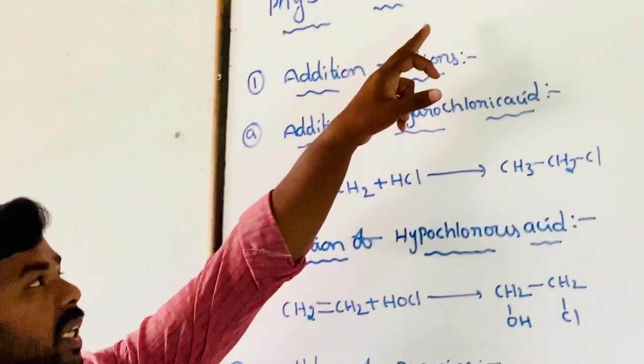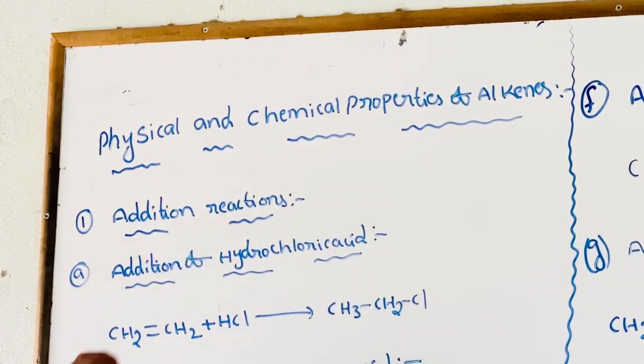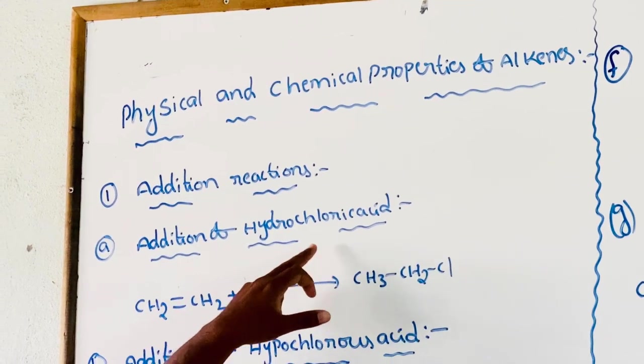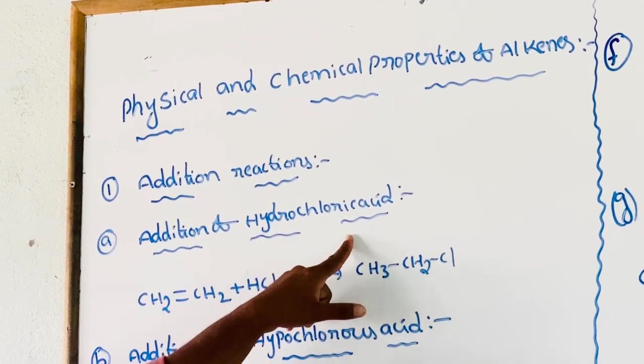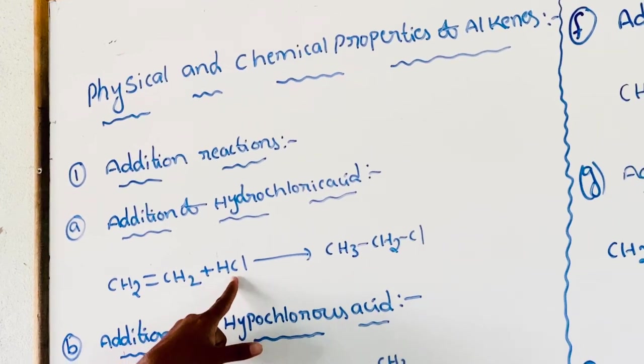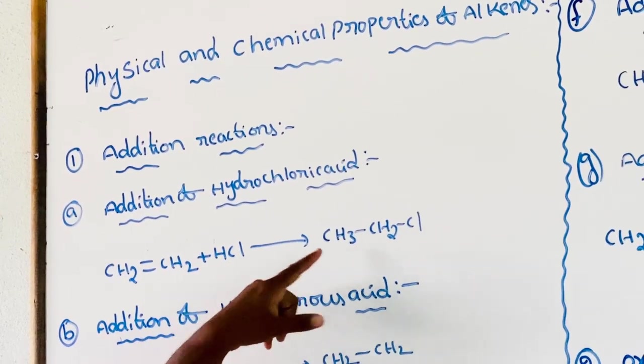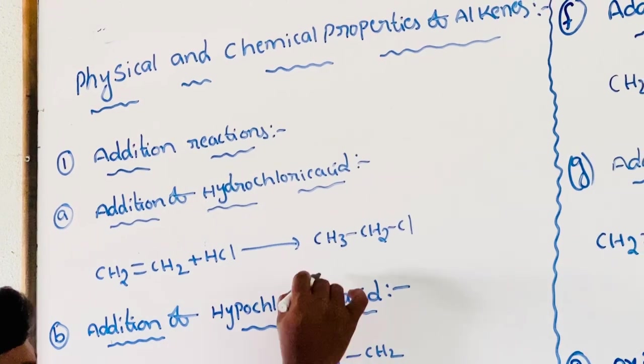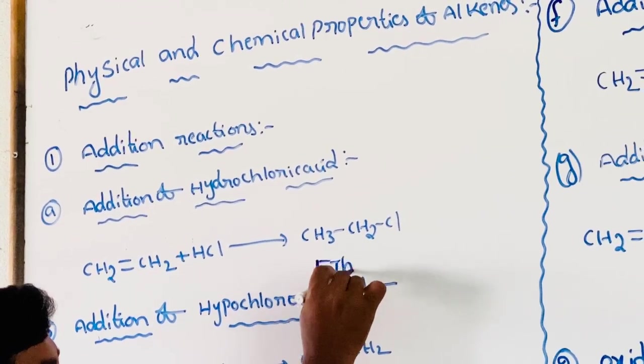Next, Chemical Properties of Alkenes. Addition reactions. First is addition of hydrochloric acid, HCl. Ethene reacts with hydrochloric acid to give ethyl chloride. Ethyl chloride is an alkyl halide.